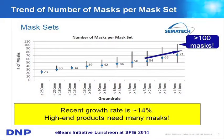Based on the Sematech survey last year, the mask number per set is increasing along with the technology node. You can see a very rapid increase after the 32-nanometer node. Currently, people are using more than 70 masks per set for the 15-nanometer node. Remarkably, the maximum in the bar has already exceeded 100, which is a huge number of masks per set.